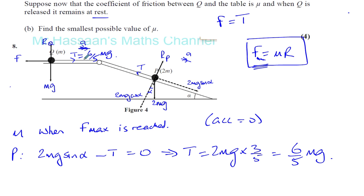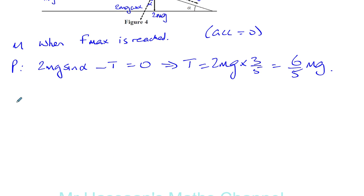Now, we know that that must be the same as the friction. The friction must equal 6 over 5 mg because this is in equilibrium. So we can say now, if we consider particle Q, friction must equal the tension. So friction must equal 6 over 5 mg.